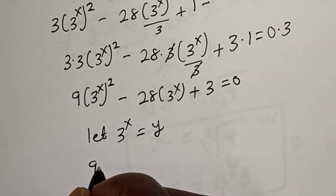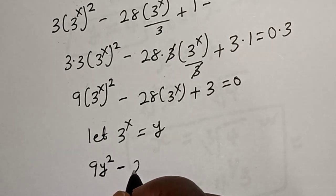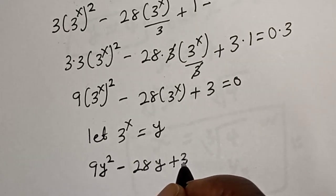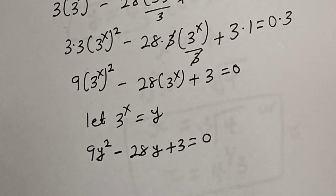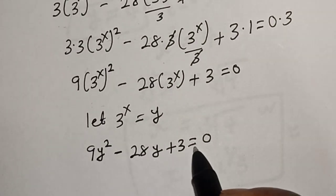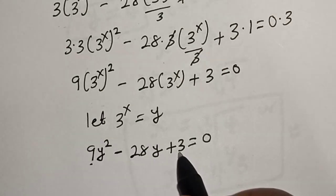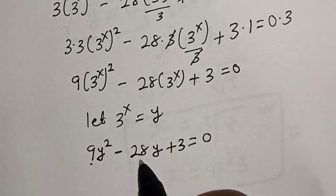We have 9y squared minus 28y plus 3 is equal to 0. This is a quadratic equation which can be solved using the factorization method. Multiply the coefficient of y squared by the constant to get 27.